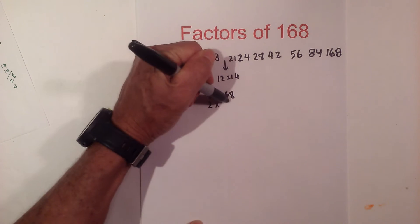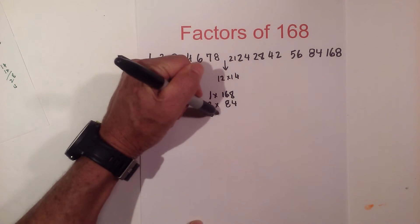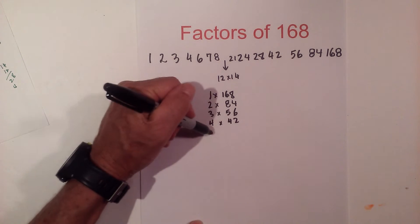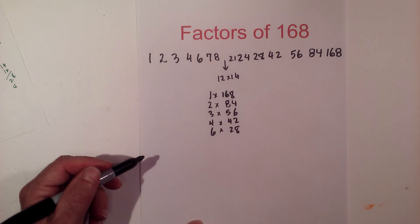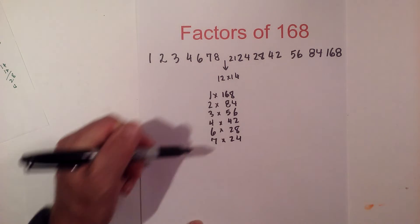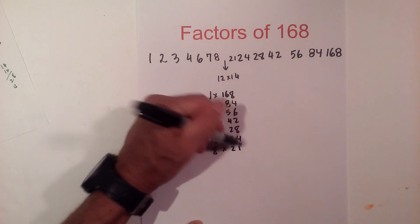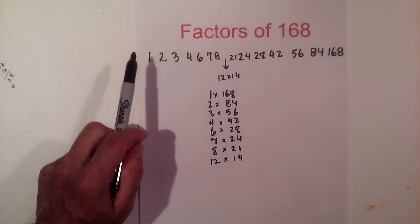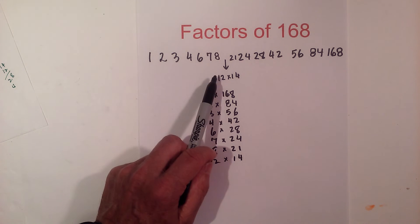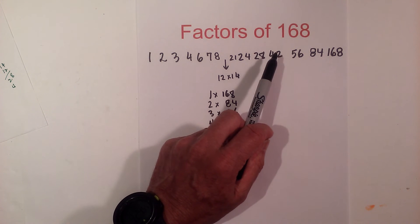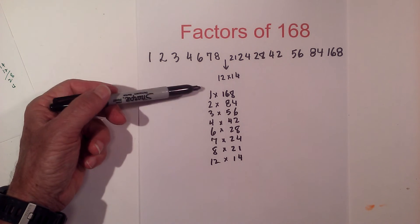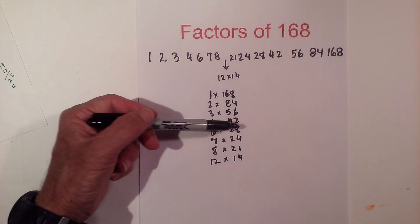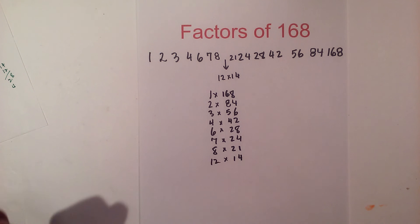So now let's write these in pairs: 1 times 168, 2 times 84, 3 times 56, 4 times 42, 6 times 28, 7 times 24, 8 times 21, and 12 times 14. The factors of 168 are: 1, 2, 3, 4, 6, 7, 8, 12, 14, 21, 24, 28, 42, 56, 84, and 168.